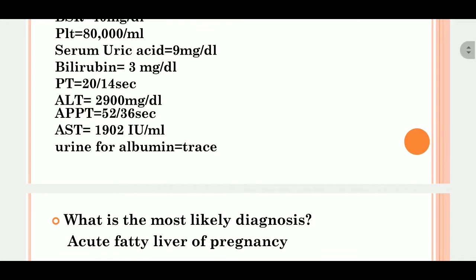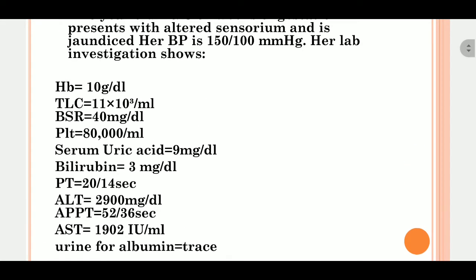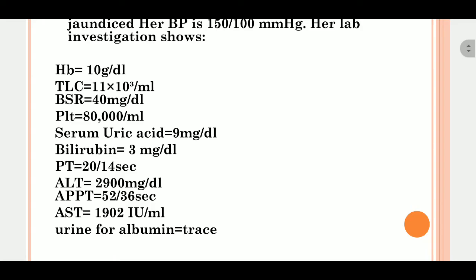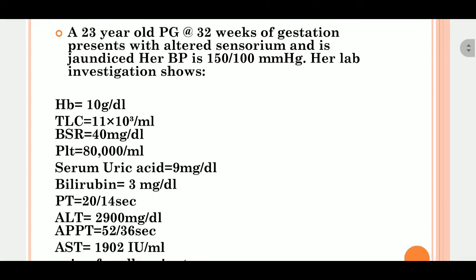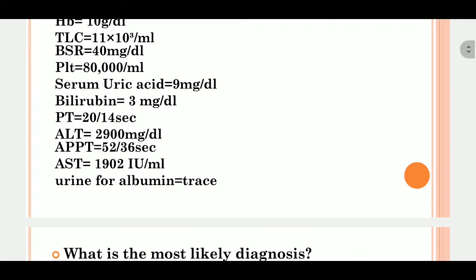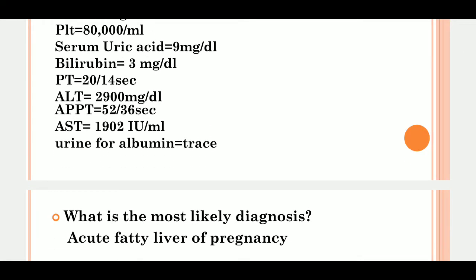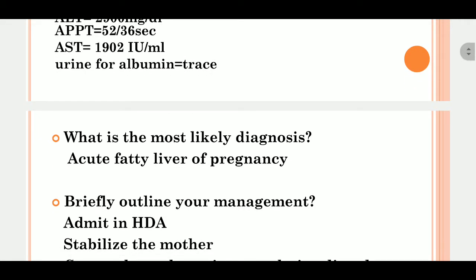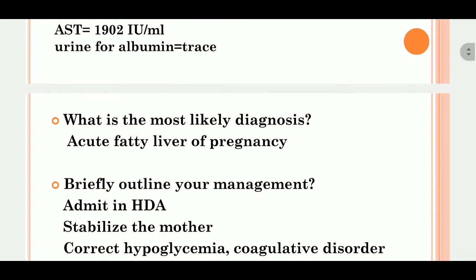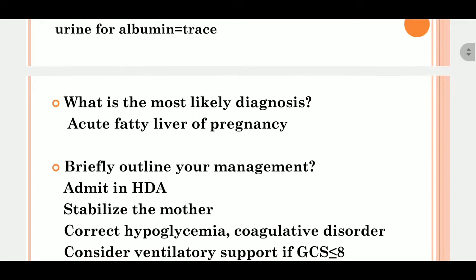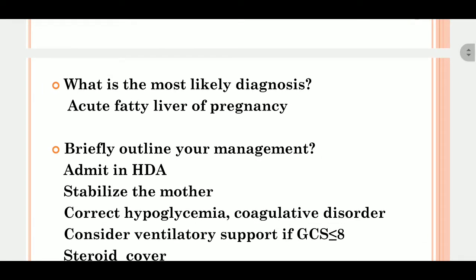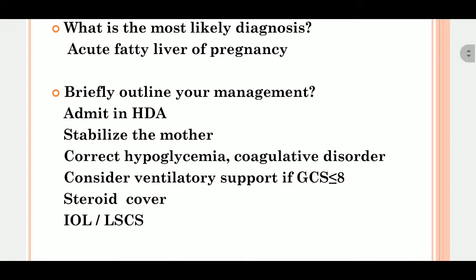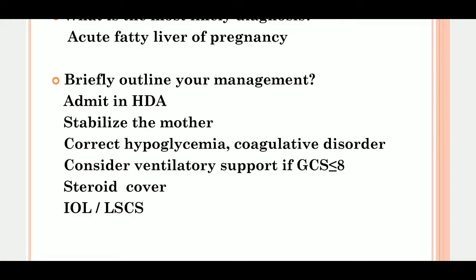The question is: what is your diagnosis? Although it looks like a picture of HELLP syndrome, the main distinguishing feature is the BSR — the BSR is low — so the most likely diagnosis is acute fatty liver of pregnancy. Management: admit to high dependency unit, stabilize the mother, correct hypoglycemia and coagulopathy, consider ventilatory support if GCS is less than 8, and deliver via IOL and LSCS.